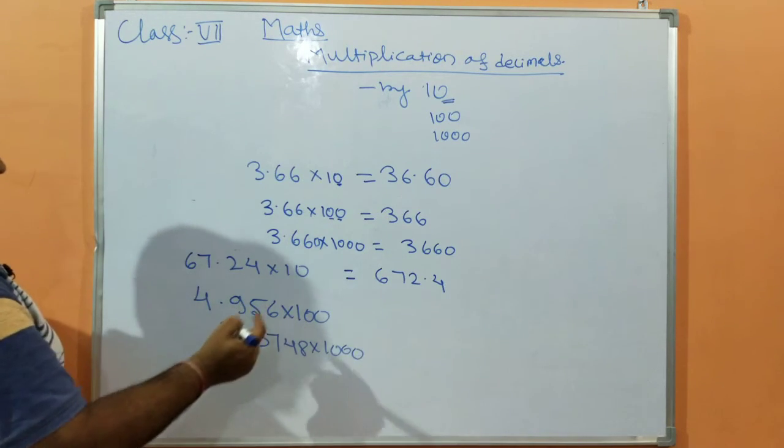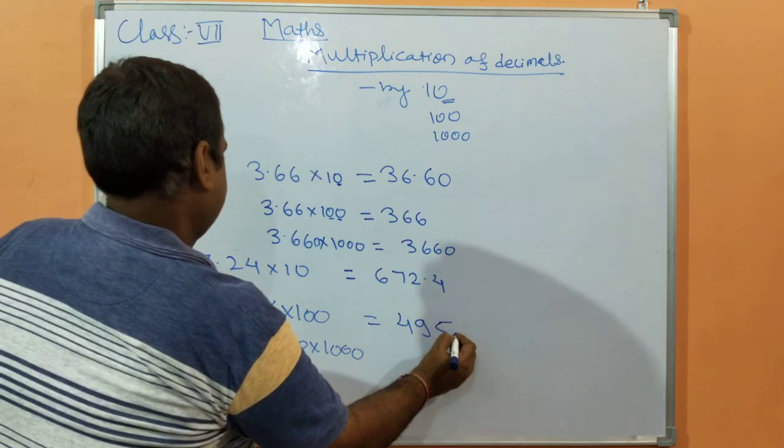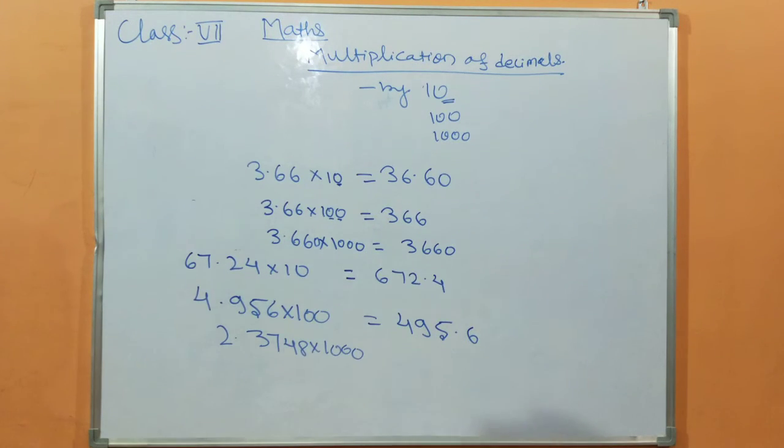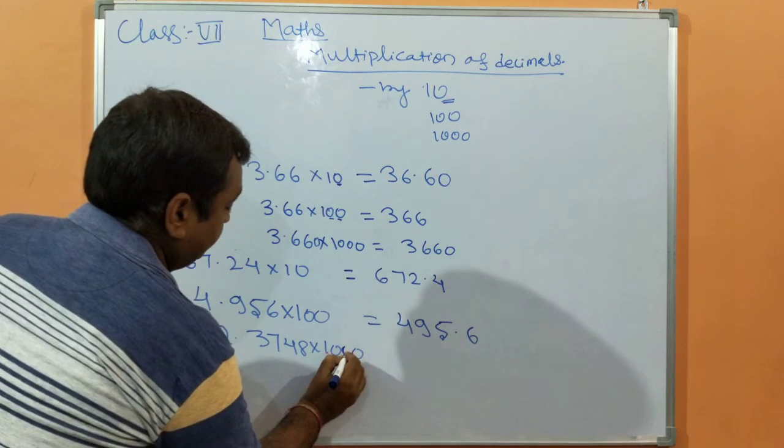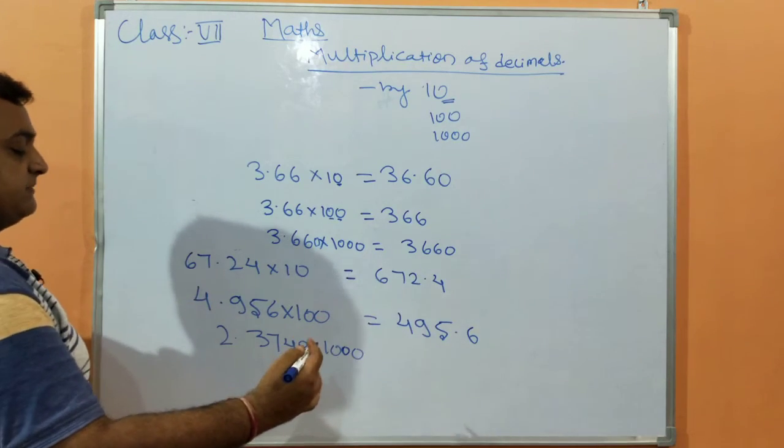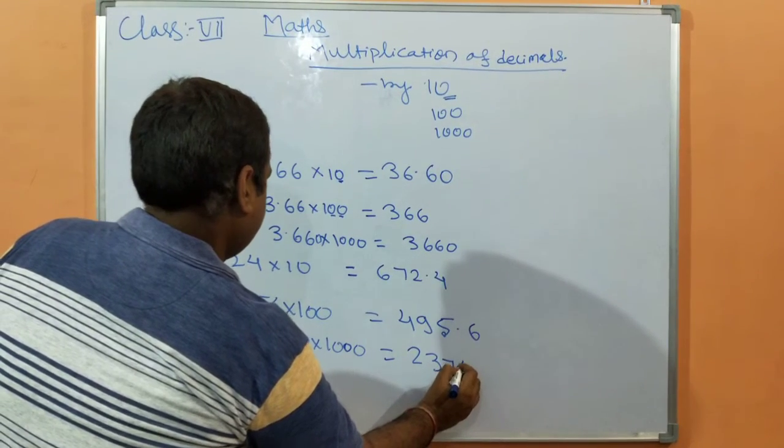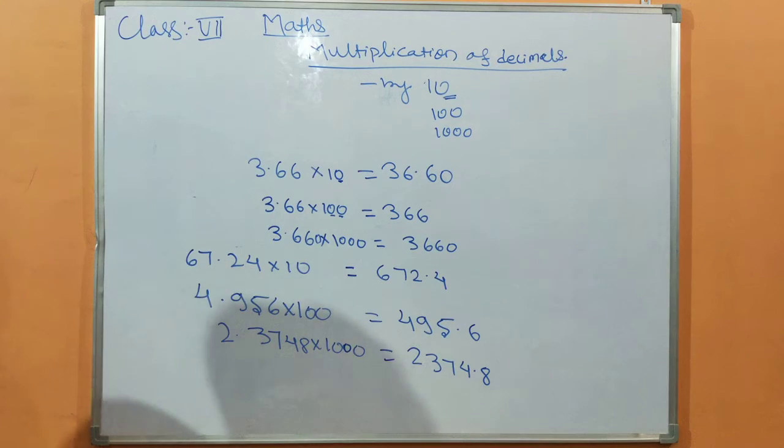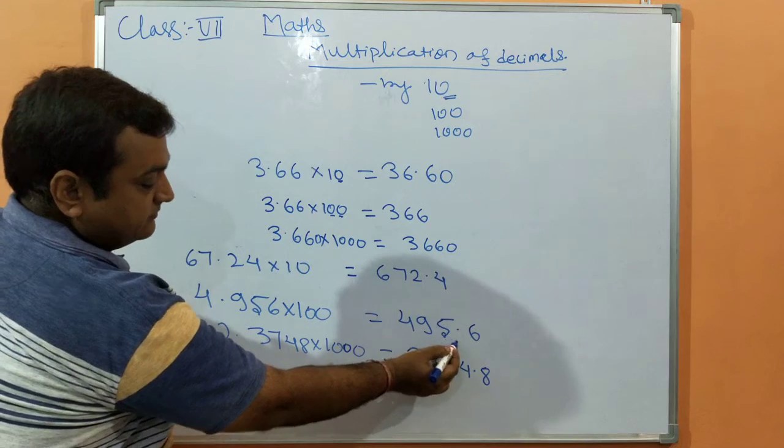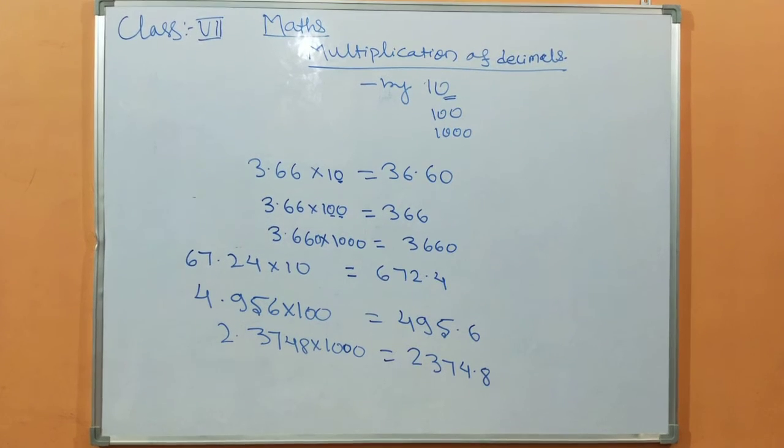If we multiply the number by 100, the decimal position will shift right 3 digits. For 1000, it will shift 3 digits. This is the multiplication of a number by 10, 100, and 1000.